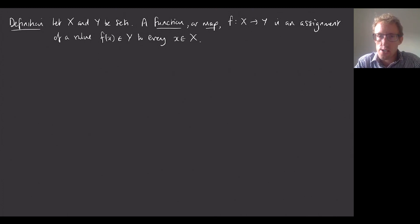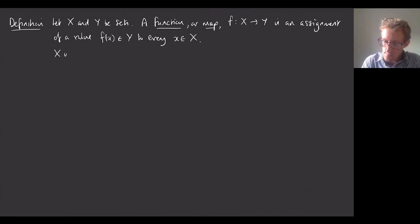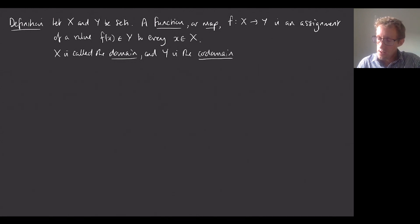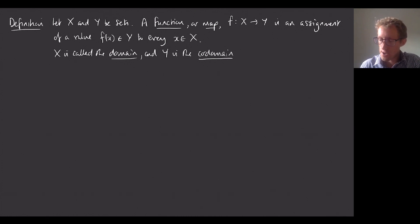The function has to assign a value f(x) to every x that we could put into it. The set X is called the domain of the function, and the set Y is called the co-domain. You might think of a function as like a formula, and sometimes there will be a formula that does the assignment, but there doesn't have to be. In general, it's just some method of assigning a value f(x) to every x.